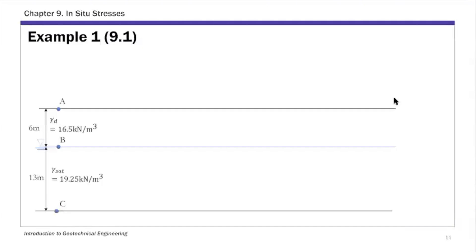Using this slide to show calculation details, we have ground surface and the depths are given. We know the two unit weights. Starting with total stress — I'll call this sigma. We calculate at points A, B, and C. Point A is zero. For point B, total stress equals unit weight times depth, which is gamma dry times the corresponding depth of 6 meters.